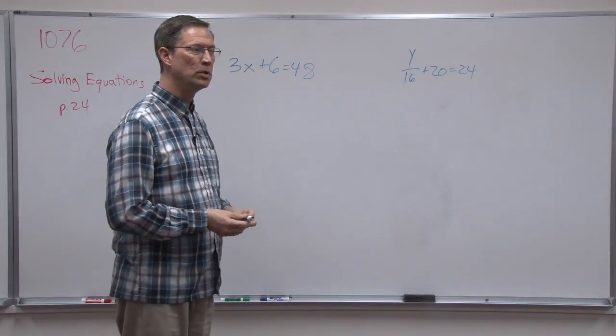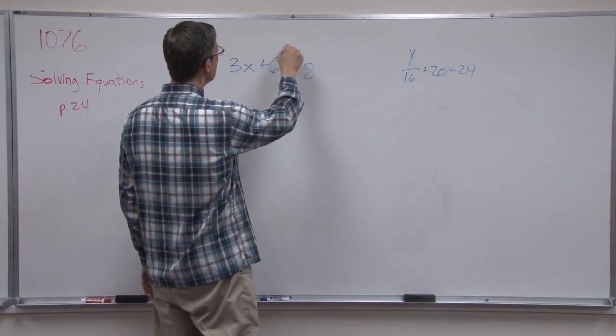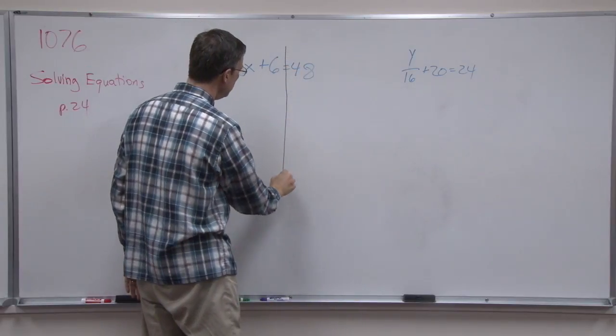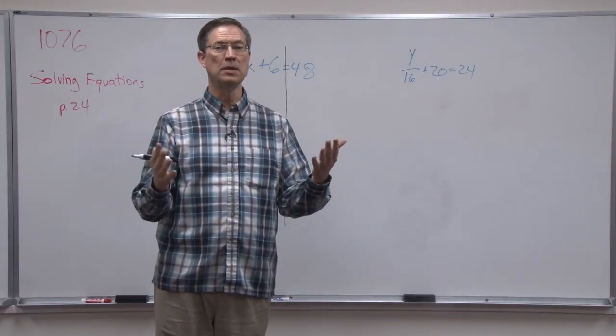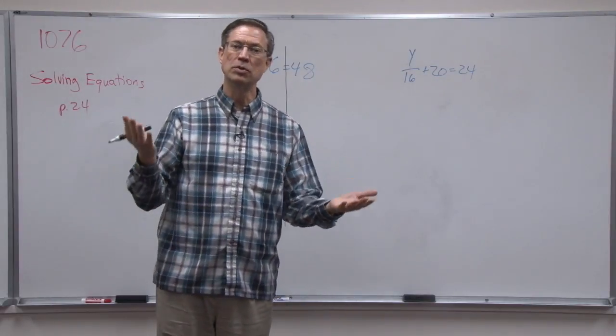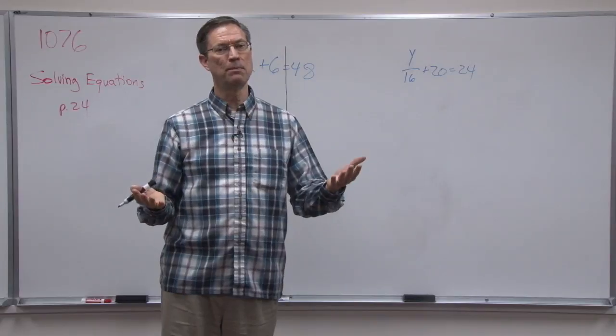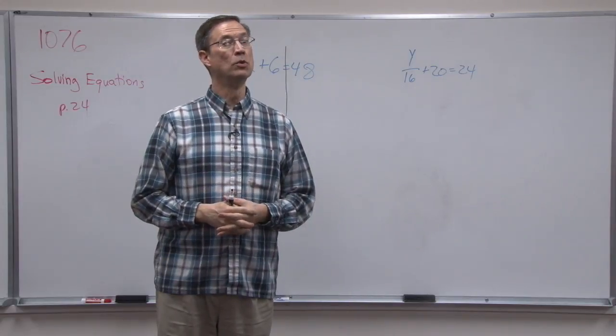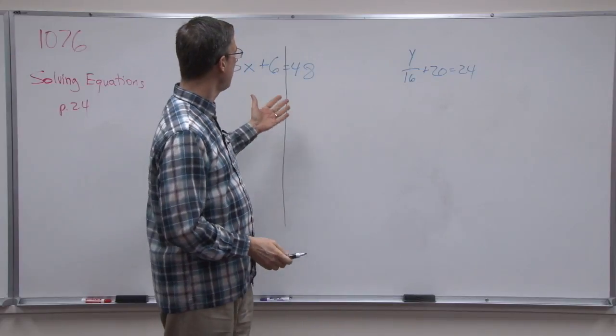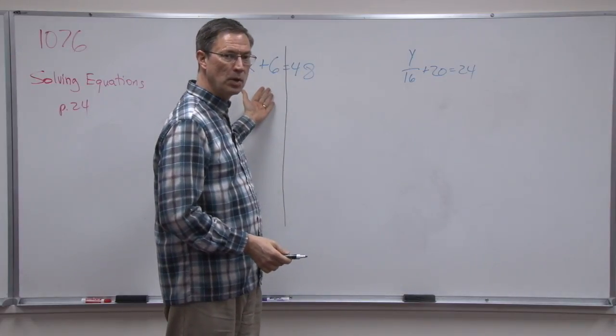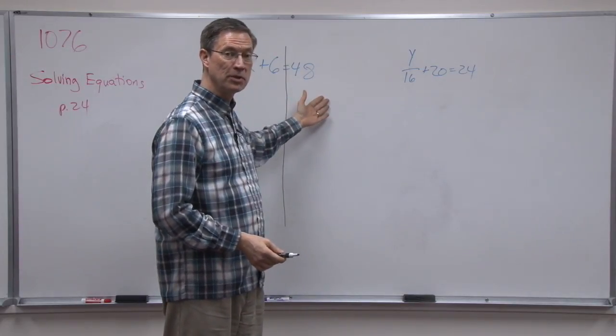I always like to tell my students in algebra to draw a line through the equals and go down the page, just to kind of separate the two sides, and remember that the two sides of the equation have to stay balanced. One of the main rules of algebra is that we can do any operation to one side of the equation as long as we do the same thing to the other.